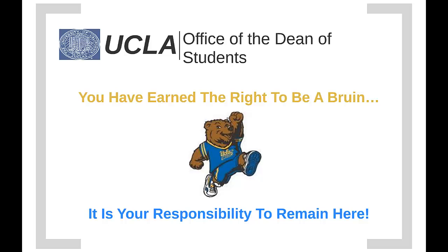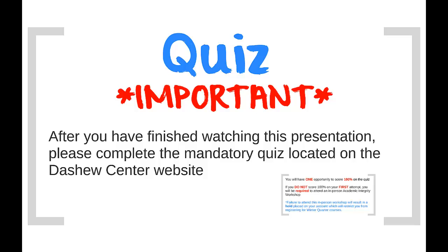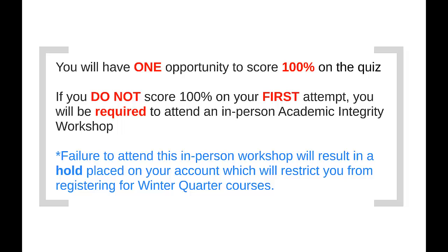You have earned the right to be a Bruin here at UCLA, but now it is your responsibility to remain here. We hope that you have taken this information seriously and will utilize the resources provided to you. You have reached the conclusion of this academic integrity presentation. Please go to the DASHU Center website to take your mandatory quiz. You only have one opportunity to take this quiz and receive a score of 100%. If you receive anything less, you will be required to attend an in-person academic integrity workshop during the fall quarter. If you do not attend this workshop, you will not be able to register for your winter quarter courses. Good luck and welcome to UCLA.